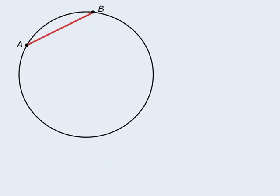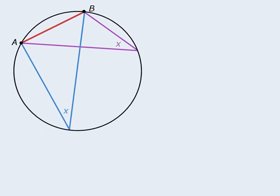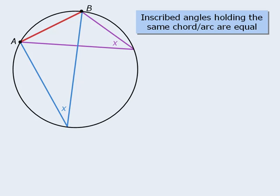OK, we're ready for our first property. If we have an inscribed angle holding a chord, and we have another inscribed angle holding the same chord, then both inscribed angles will be equal. So the property is that inscribed angles holding the same chord or arc are always equal. If we add another inscribed angle holding the same chord, that angle will be the same as the other two angles. Please note that this rule applies only if the inscribed angles in question are all on the same side of the chord. An inscribed angle on the other side of chord AB will not be the same as the other inscribed angles.